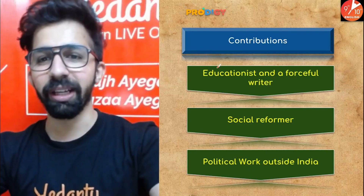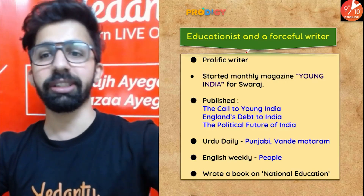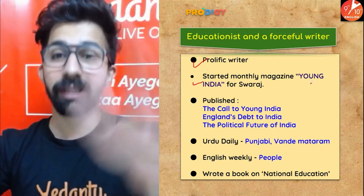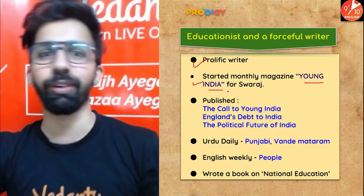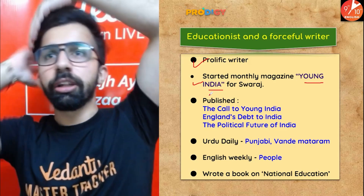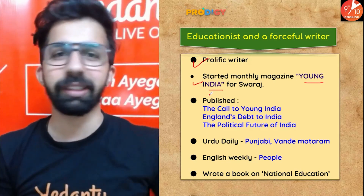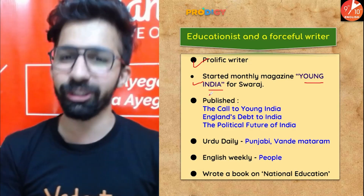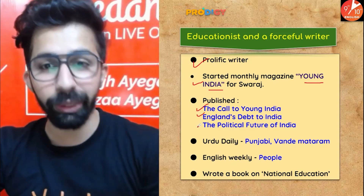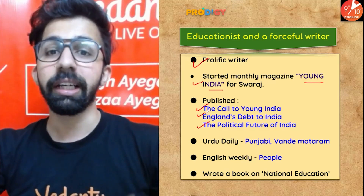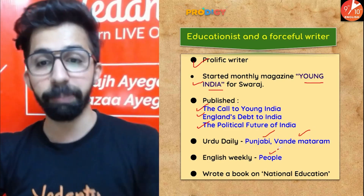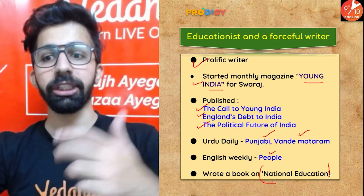As an educationist and forceful writer, Lala Lajpat Rai started a monthly magazine called Young India for Swaraj. He published articles such as The Call to Young India, England's Debt to India, and The Political Future of India. He also wrote for newspapers like Punjabi, Vande Mataram, and The People, and wrote the book National Education.